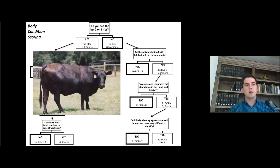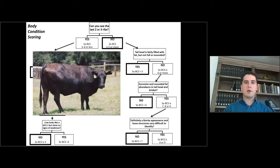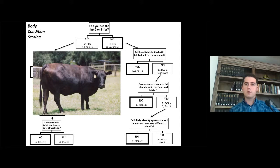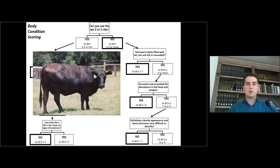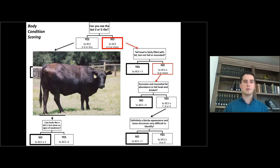For example, for this cow here, let's answer the first question: can you see the last two or three ribs? No — you don't see any of the ribs. So you know that this cow is a body condition score 5 or above. Moving to the second question: is the tail head fairly filled with fat but not full or mounded? The answer is no — you actually see a lot of fat in the tail head and there's an excessive amount of fat there.